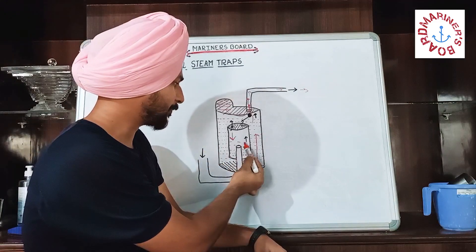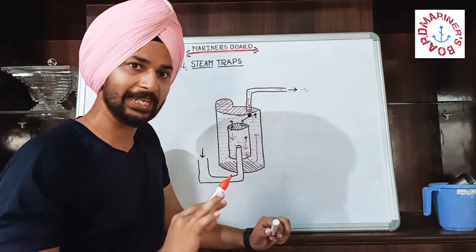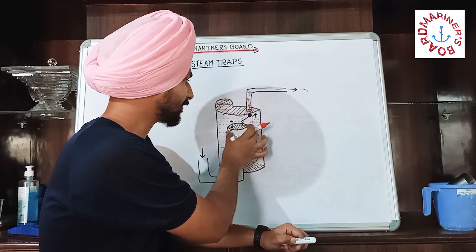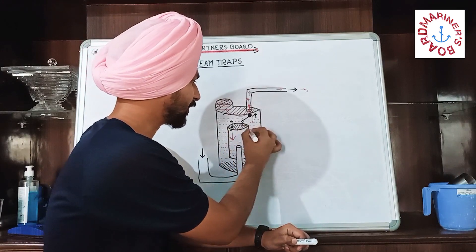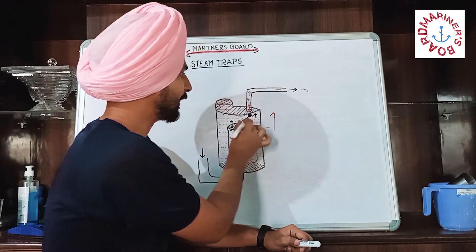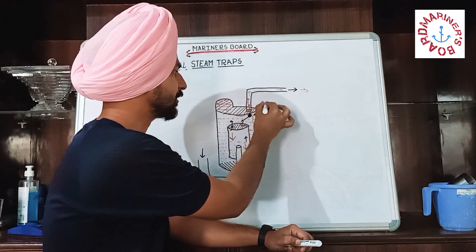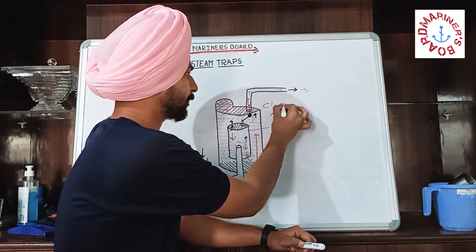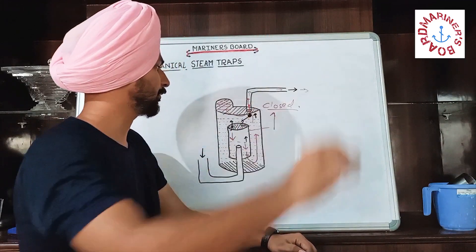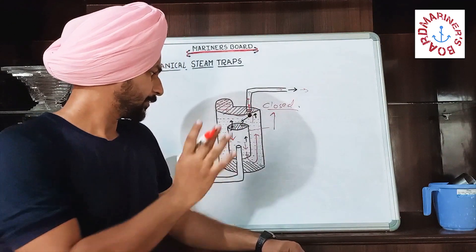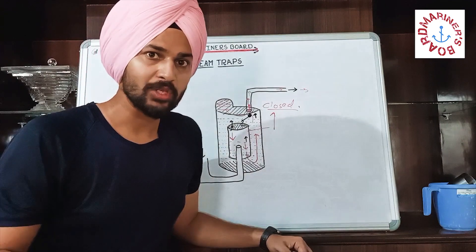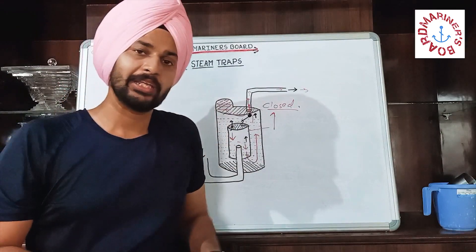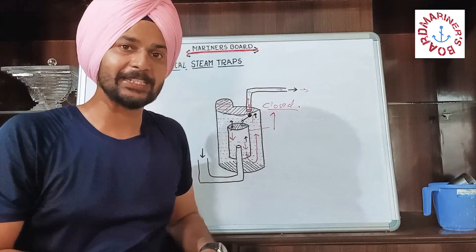The inverted bucket chamber then gets empty again, so the inverted bucket moves back up and the valve closes again. This completes the working cycle of the inverted bucket steam trap.